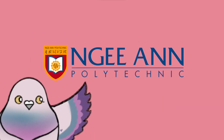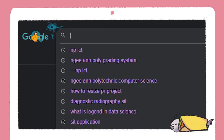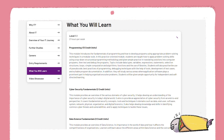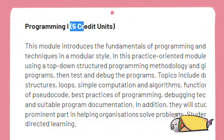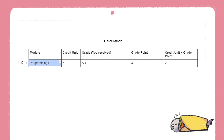So let's use Nian Polytechnic as an example. To calculate the GPA for a semester, you need to first check the credit unit for the modules in the semester. For NP, you can search the course up and look at the bracketed credit unit at the side. The credit units for each module will be multiplied with the respective grade points you acquired. In this case, Module 1, Programming 1, has a credit unit of 5.